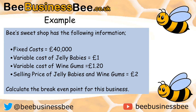Let's use that to perform a calculation for a question. A sweet shop has the following information: fixed costs of £40,000, the variable cost of jelly babies being £1, the variable cost of wine gums being £1.20, and the selling price of jelly babies and wine gums being £2 each. The average price is already £2, because £2 plus £2 equals £4, divided by 2 gives you £2.